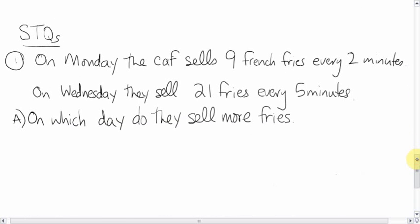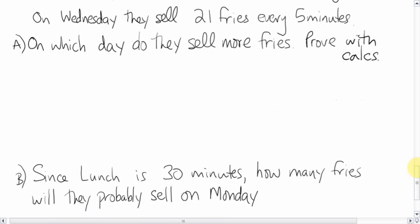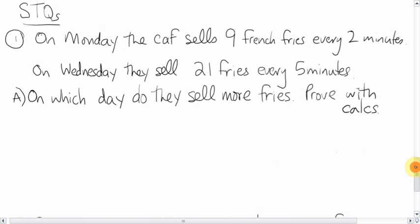Here's a skill testing question. And it has to do with our cafeteria. Let's say on Monday, the caf sells nine french fries every two minutes. On Wednesday, they sell 21 french fries every five minutes. My question to you is, and they need proof, is on which day do they sell more fries? Prove this with calculations. Just like I did above. I'll call them calcs for short. That's part A. And then for part B, since lunch is 30 minutes, how many fries will they probably sell on Monday? So, take your information from Monday, extend that to the full 30-minute lunch hour, and see what you get. That is it. Good luck with all that. Talk to you later. Bye-bye.